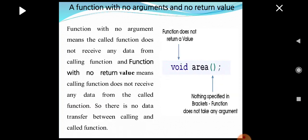The first prototype is a function with no argument and no return value. A function with no argument means the called function does not receive any data from the calling function, and no return value means the calling function does not receive any data from the called function. So there is no mutual interchange of data between the calling and called function. In this example, void is provided indicating no return value, and it has no argument.